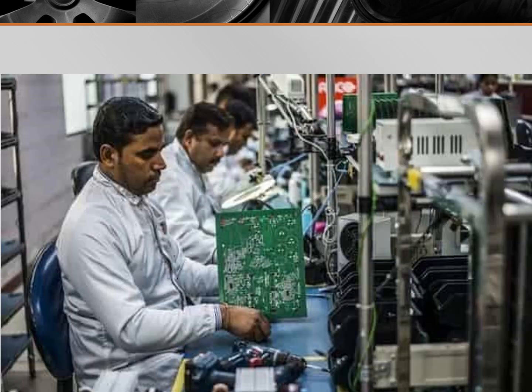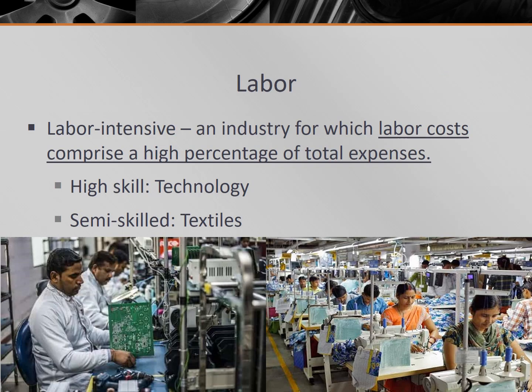Certain technologies such as computers, cameras, and watches require very skilled or highly educated workers, which will generally have higher labor costs. So companies like the high-tech companies of Silicon Valley will often locate close to colleges, universities, or other training institutions. But mass-produced goods may not need the same skill or education level.